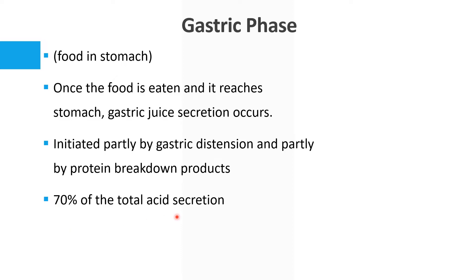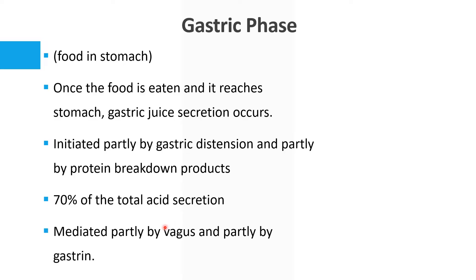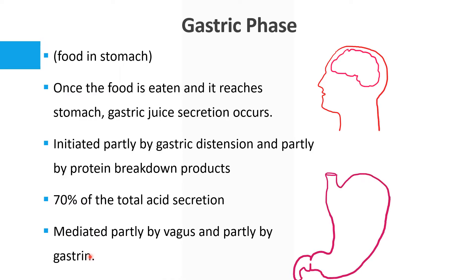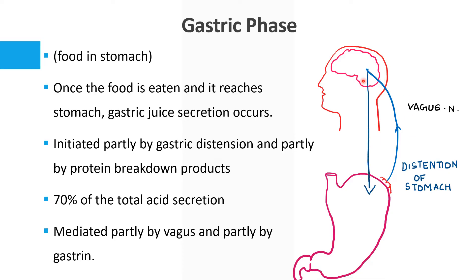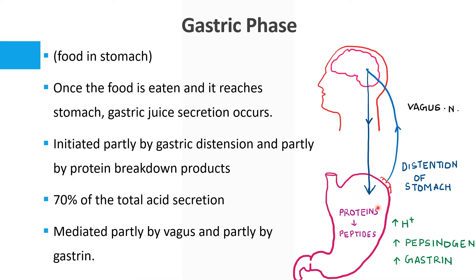Around 70% of the total acid secretion is due to the gastric phase, meaning the majority of gastric acid secretion occurs when food is inside the stomach. It is mediated partly by the vagus nerve and partly by gastrin. Distension of the stomach activates the vagus nerve, which sends impulses to the brain and causes release of increased gastric secretion — H+, pepsinogen, and gastric acid.